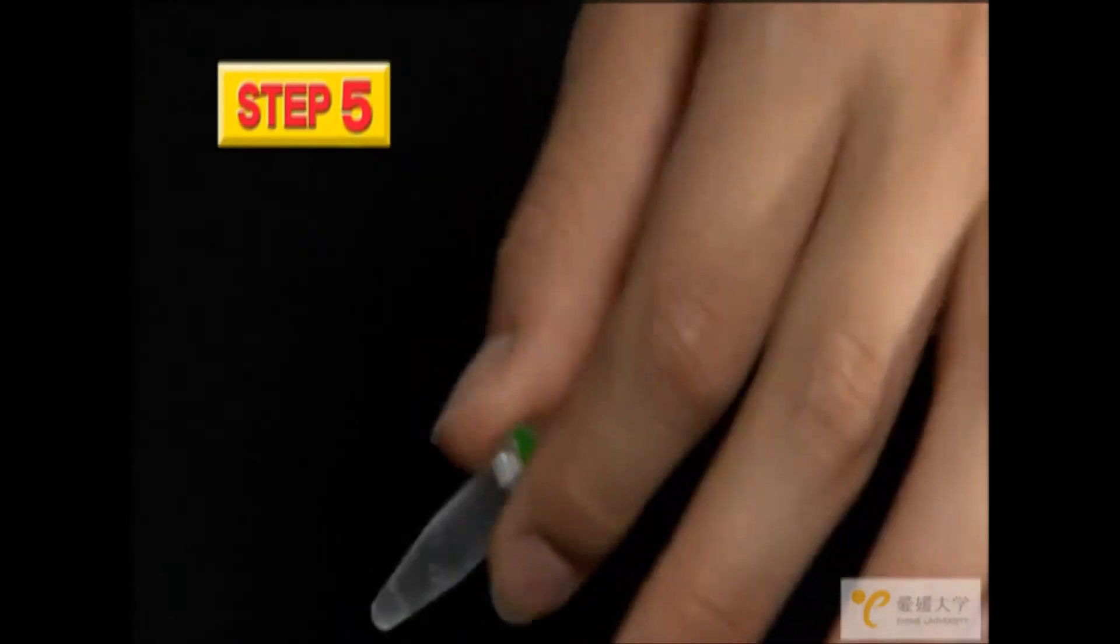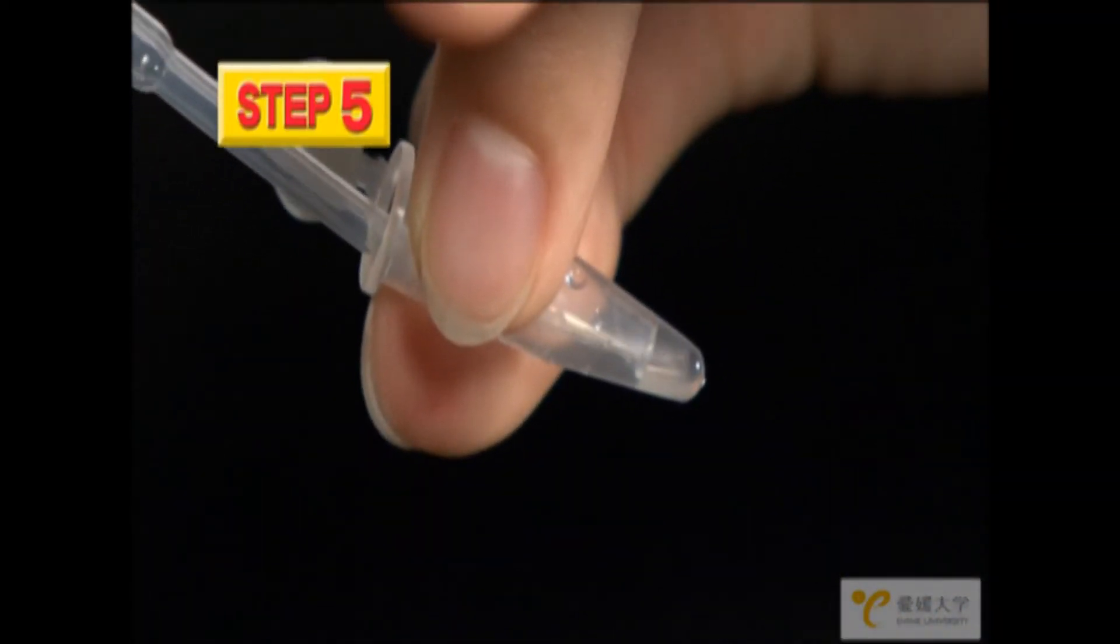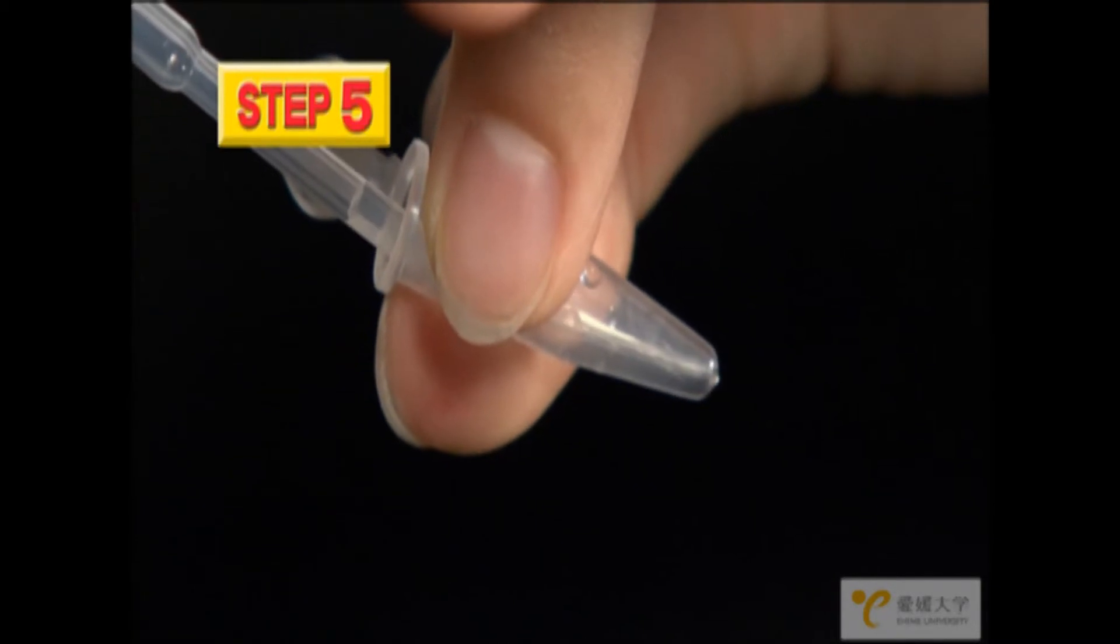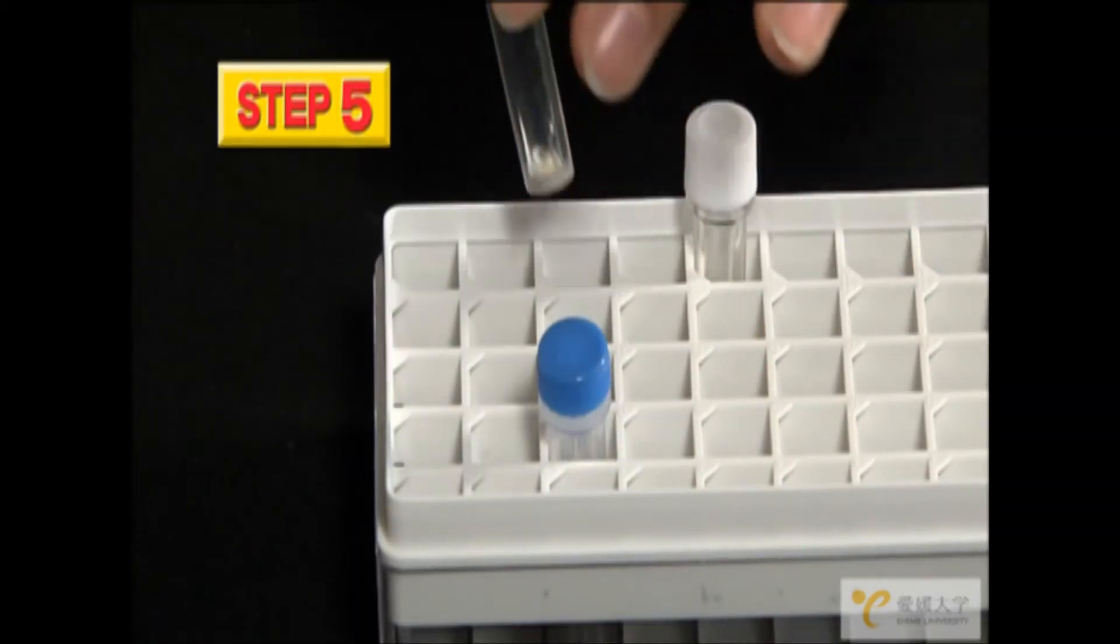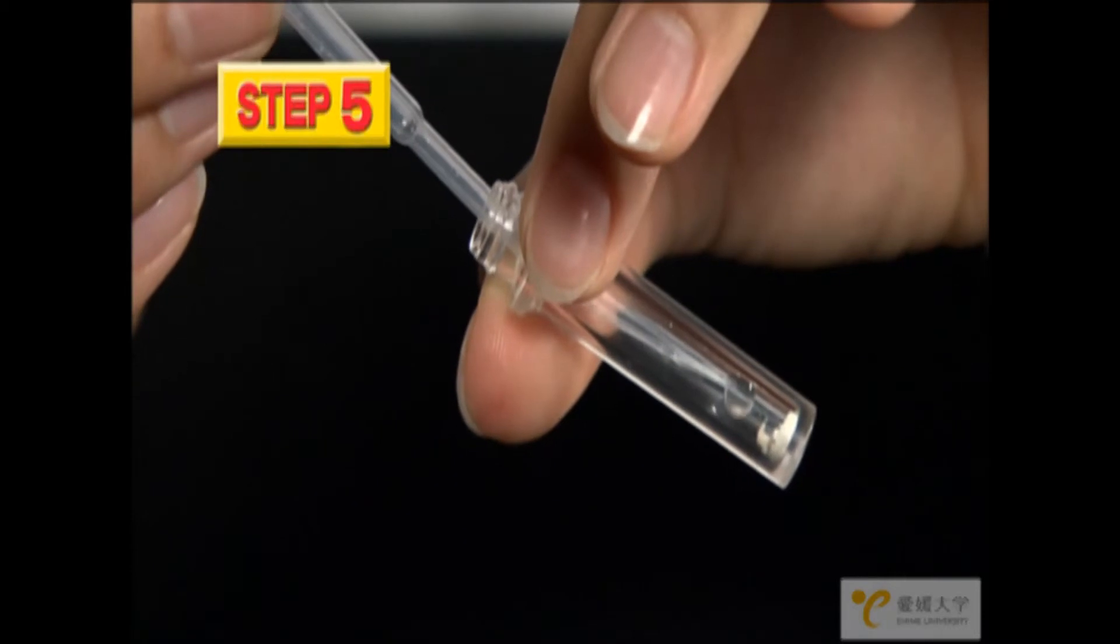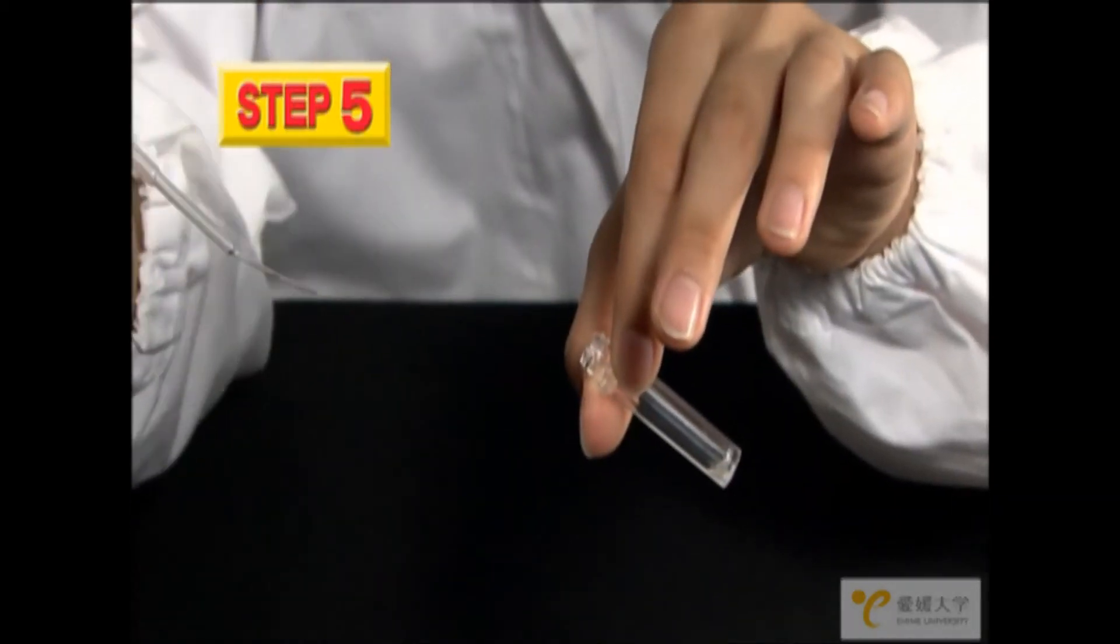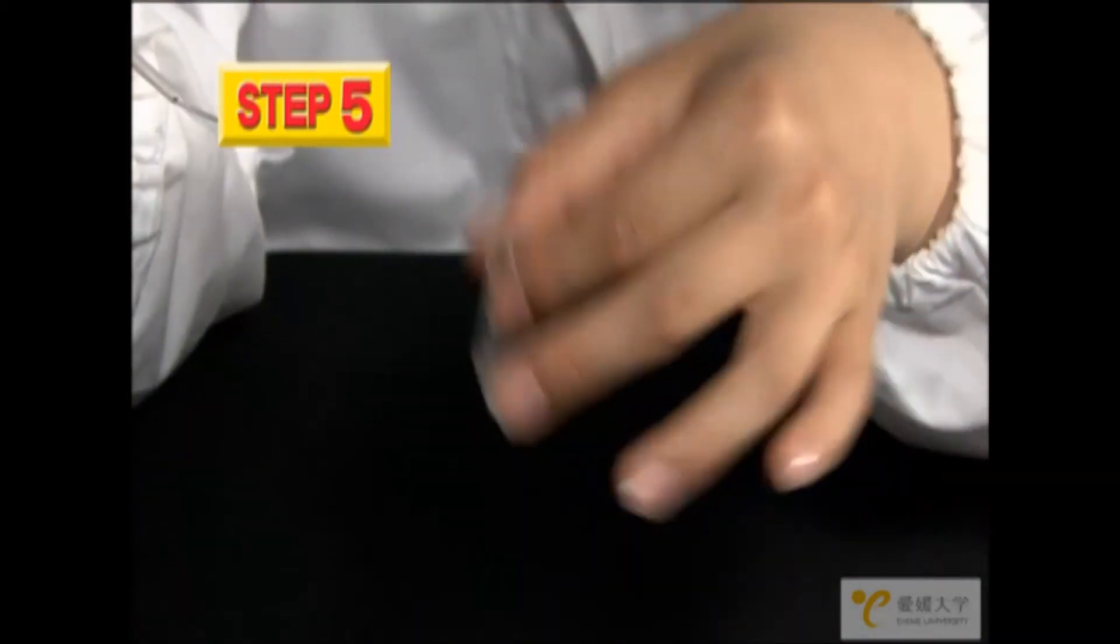Then, make sure the liquid has settled in the bottom of the small tube with the green dot. Remove the cap and use the dropper to collect the liquid. Expel the liquid in the dropper into the large tube. Shake the tube until the powder dissolves, making a white solution.